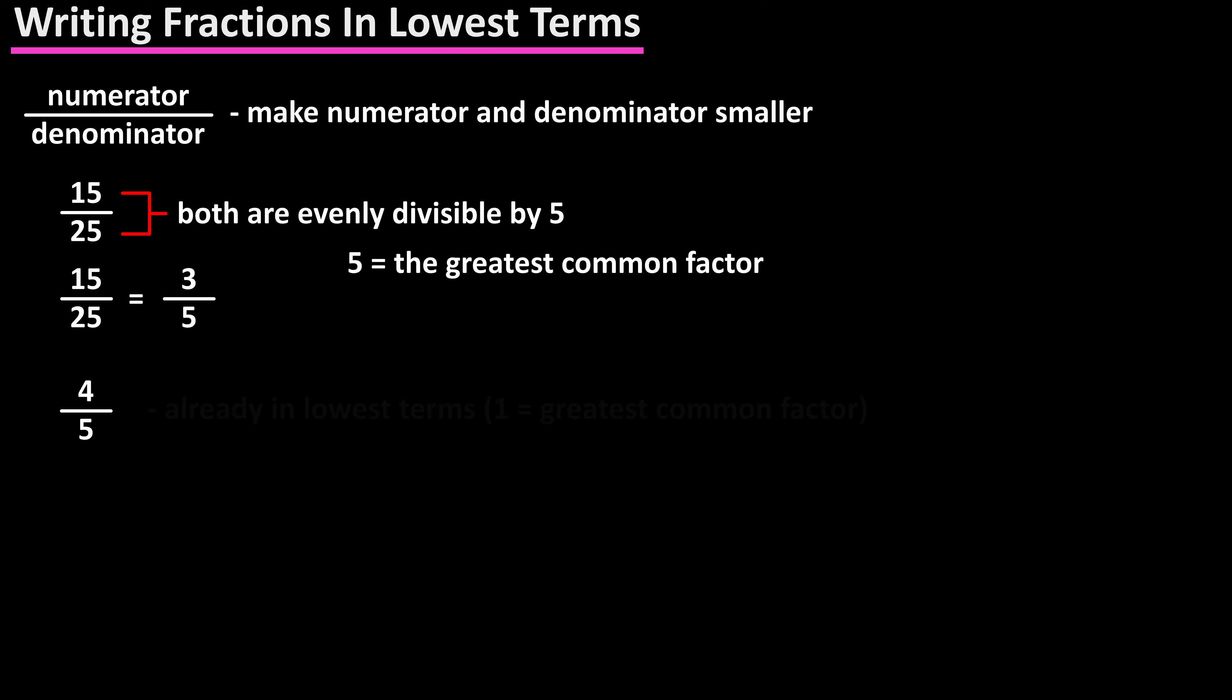The fraction 4 over 5 is already in lowest terms because there is no common number other than one that both are divisible by without having a remainder.